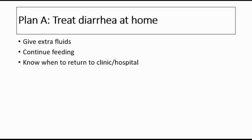Plan A is to treat diarrhea at home, where we give extra fluids as much as the child can take, and ask the mother to breastfeed more frequently and for longer. After each loose stool, give the child 10 ml per kg of oral rehydration salt (ORS). Continue feeding — breastfed children can continue breastfeeding, and formula-fed children can continue formula. The mother should return to the clinic if the child is unable to drink or breastfeed, is drinking poorly, becomes sicker, develops fever, or has blood in the stool.